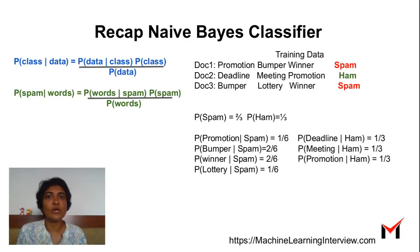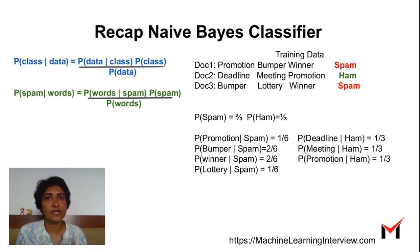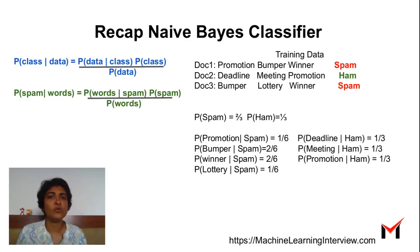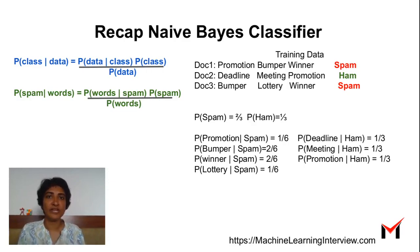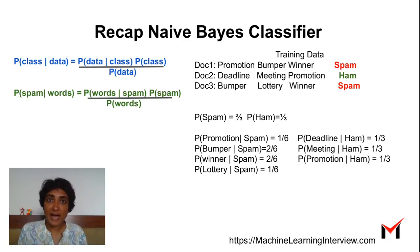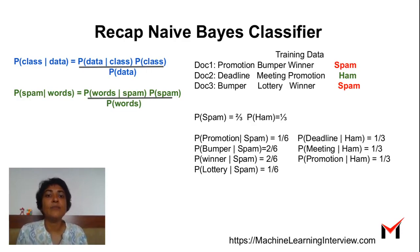Let's look at a small example. We have three toy documents with stop words removed, leaving only the prominent words. Document one has 'promotion', 'bumper', and 'winner' — it's a spam document. Document two has 'deadline', 'meeting', and 'promotion' — it's a HAM document. Document three has 'bumper', 'lottery', and 'winner' — again a spam document. Probability of spam in general is two-thirds, and probability of HAM is one-third.